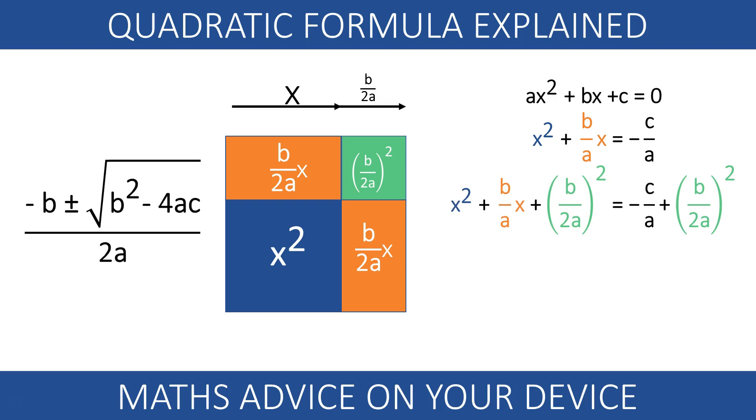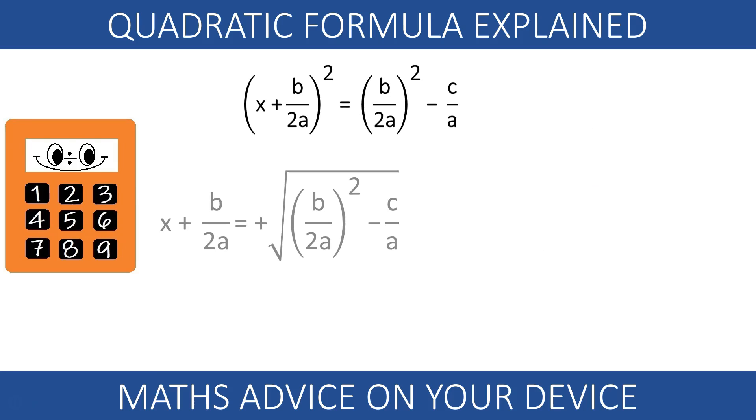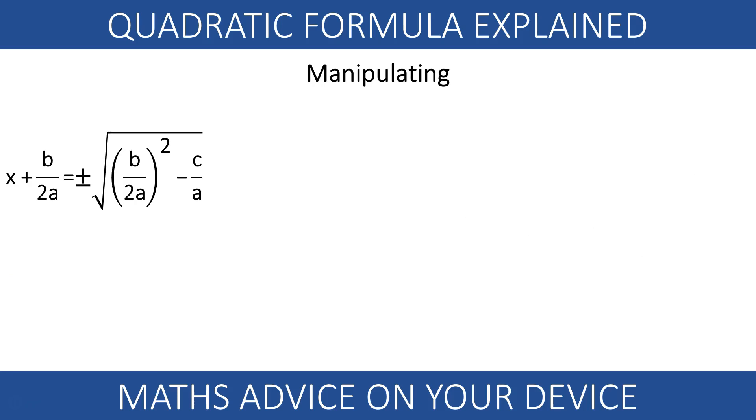Our perfect square has an area given by the square of x plus b over 2a and is equal to b over 2a squared minus c over a. The solutions of our quadratic equation represent the length x of the sides of our blue square. The first solution is the positive square root of this area and the second solution is the negative square root of this area. Mathematicians use the shortcut plus minus.